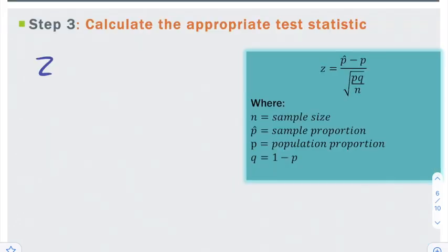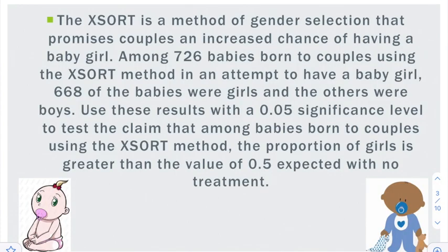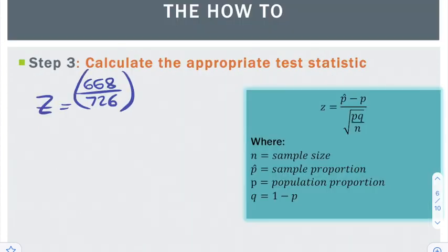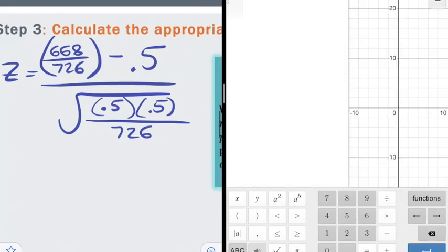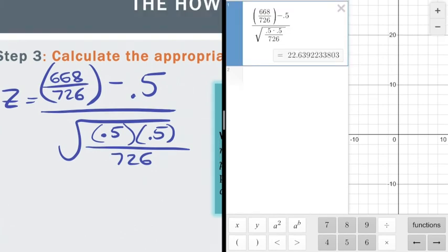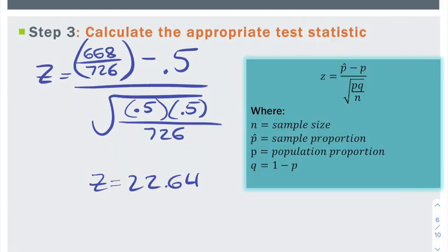Let's set this up. z equals, our p-hat is going to be talking about the data we had. Out of 726, 668 were girls, so that fraction is our p-hat. Our p from our null hypothesis was 0.5. We're going to write that again here. And then 1 minus 0.5 is also 0.5, so that's our q. And our n is that 726 sample size. Now we're going to go to decimals to calculate this. Decimals again makes it a lot easier to make sure that these match and you've entered it correctly into the calculator. This gives us back a z of 22.64 and we're ready to move on to our p-value.